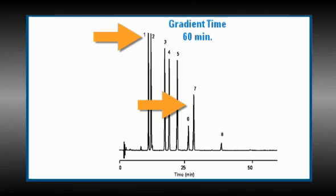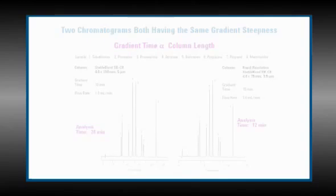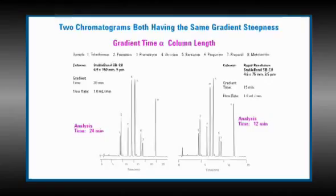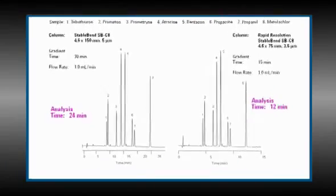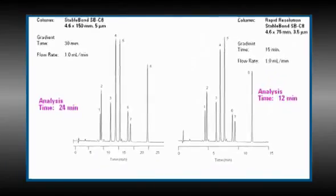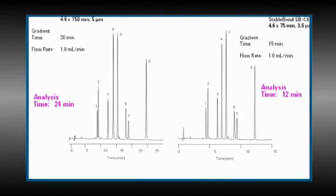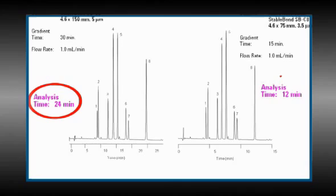In this next example, let's look at gradient steepness as it relates to column length. The gradient steepness is the same in each of these chromatograms, which keeps the elution pattern the same in each, while reducing the analysis time from 24 minutes to 12 minutes.